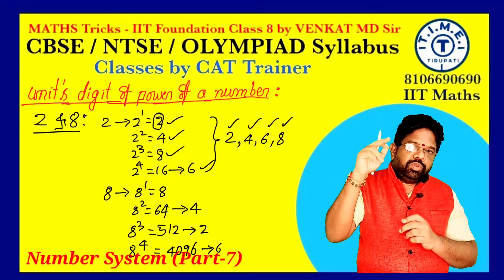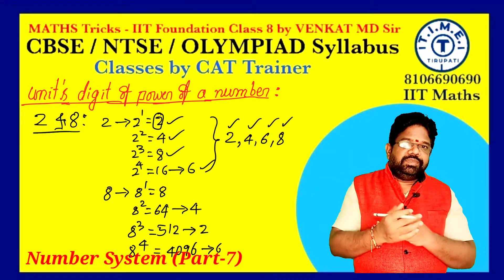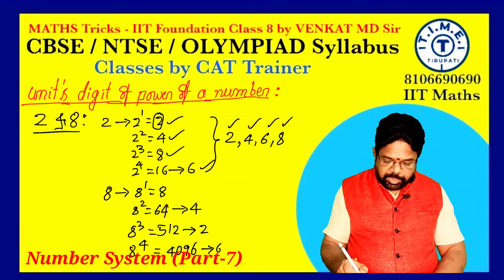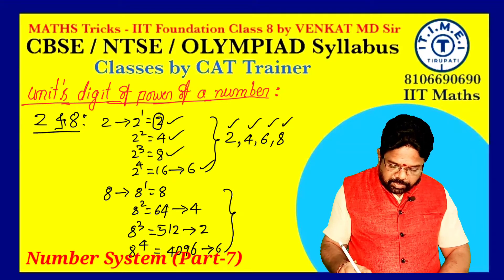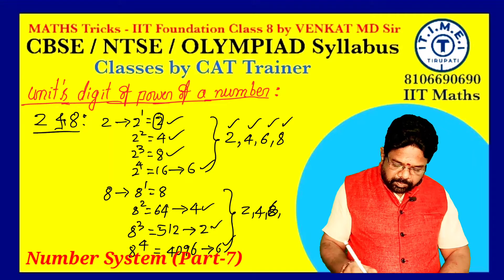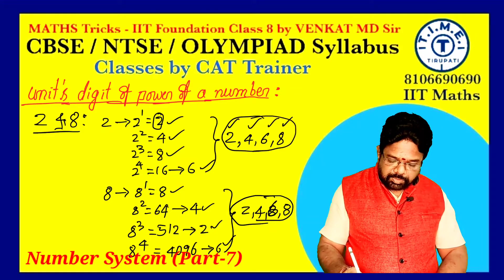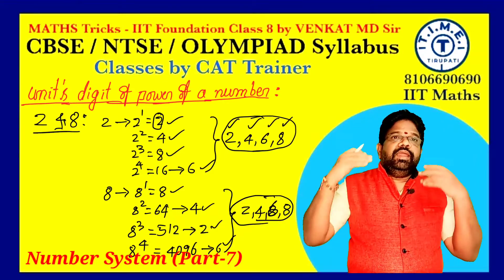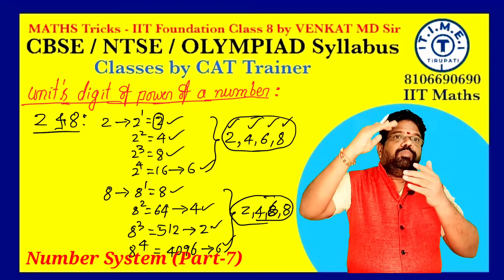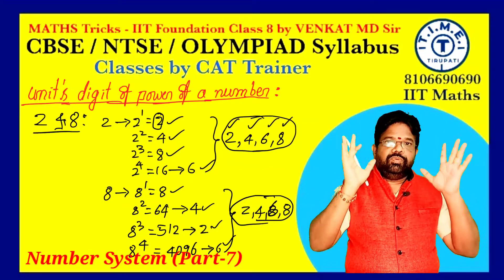For powers beyond 4, the same unit digits repeat again. Observing both 2 and 8 power sequences, you get the same set of unit's place values: 2, 4, 6, 8. So for any large power of 2 or 8, the unit's place values are the same — 2, 4, 6, or 8. Keep this in mind.